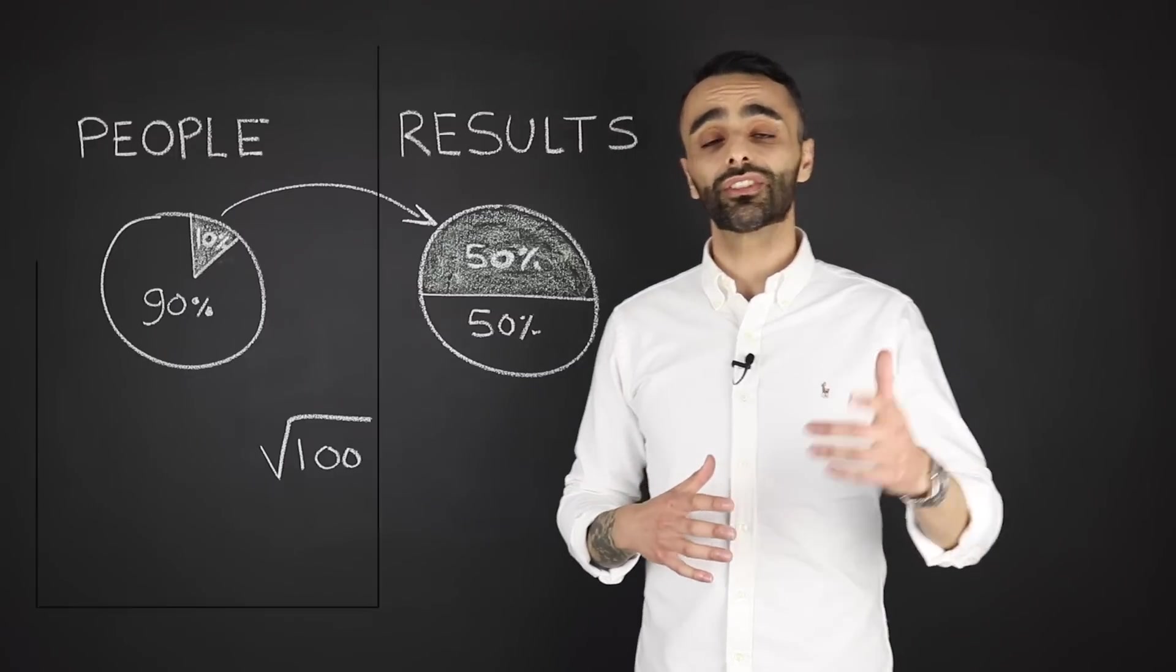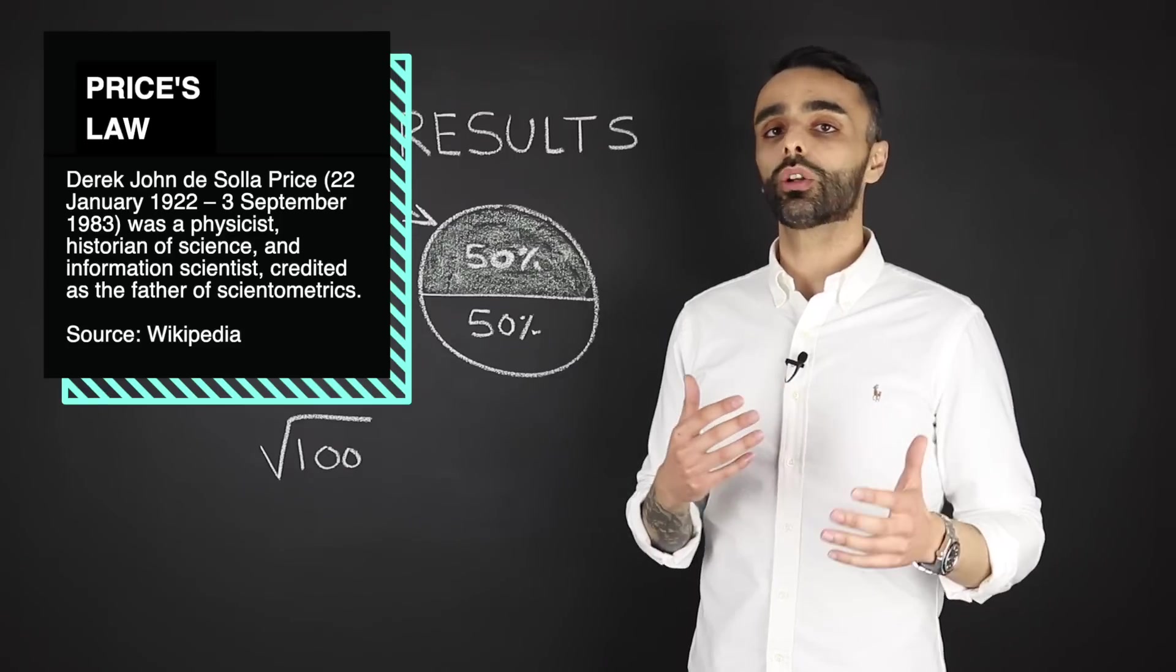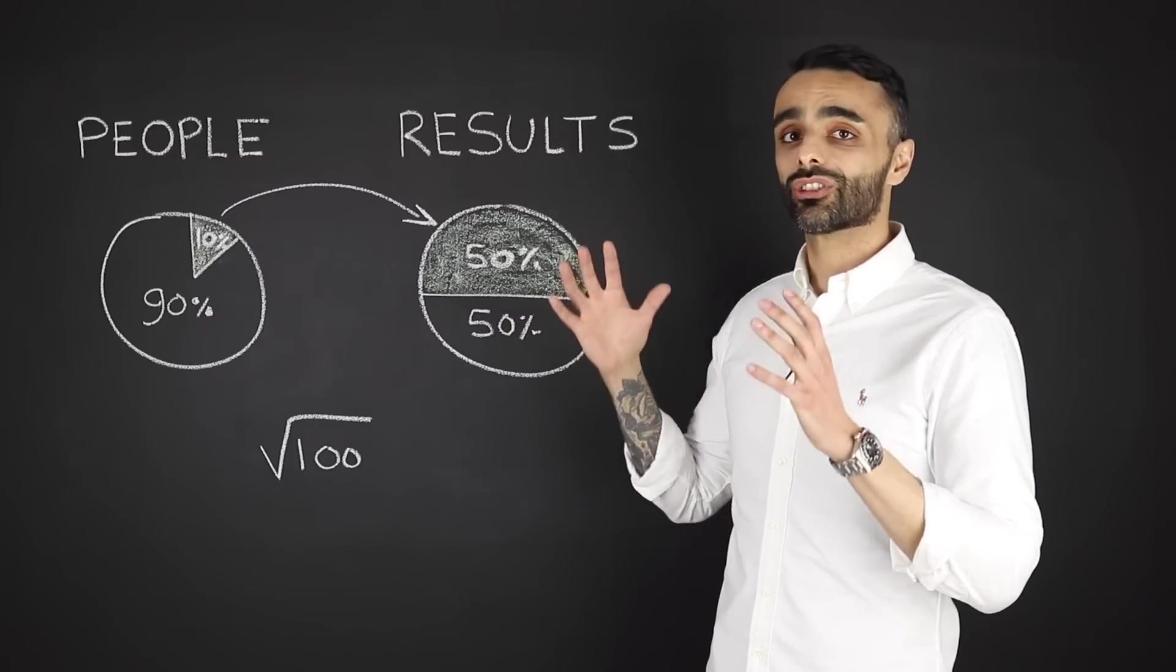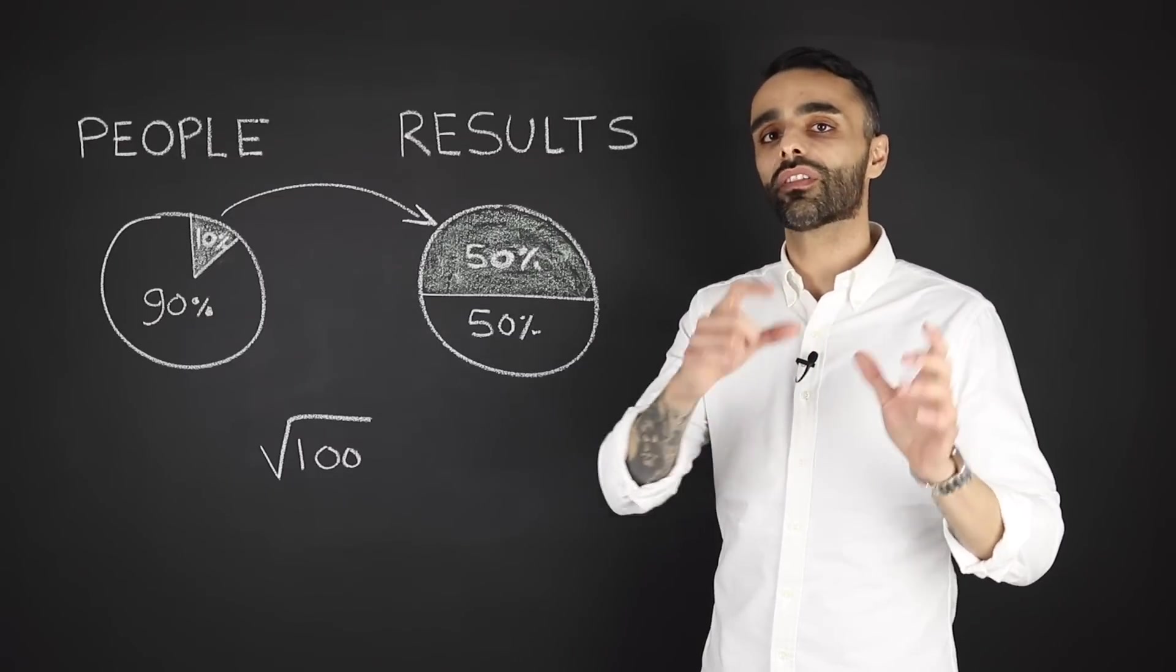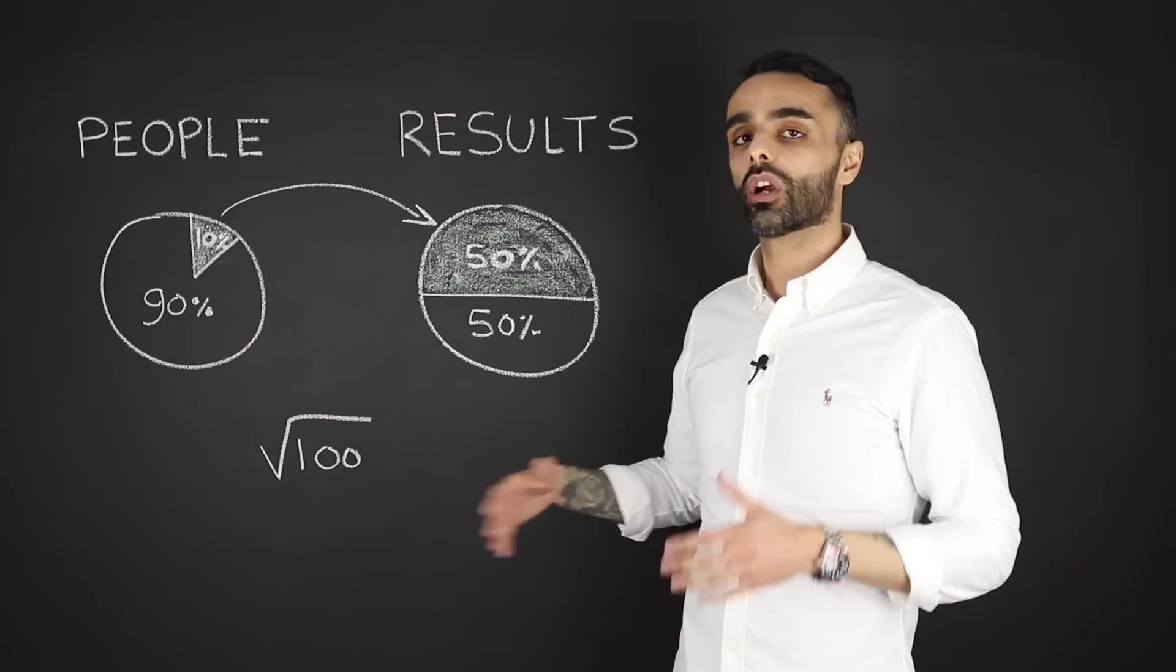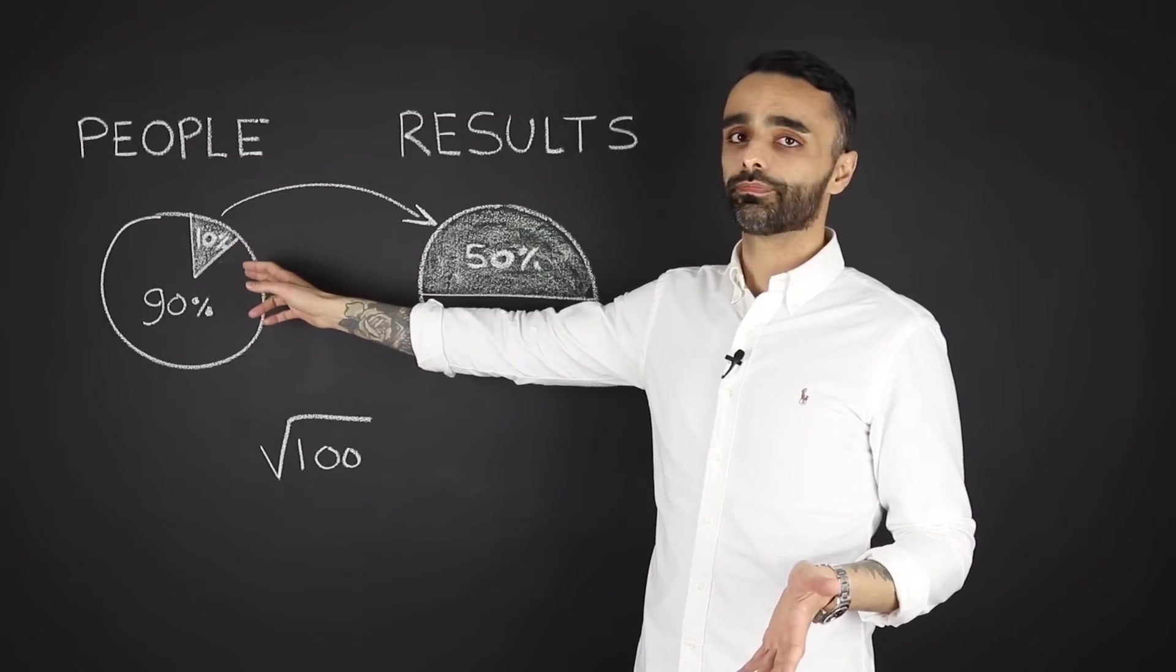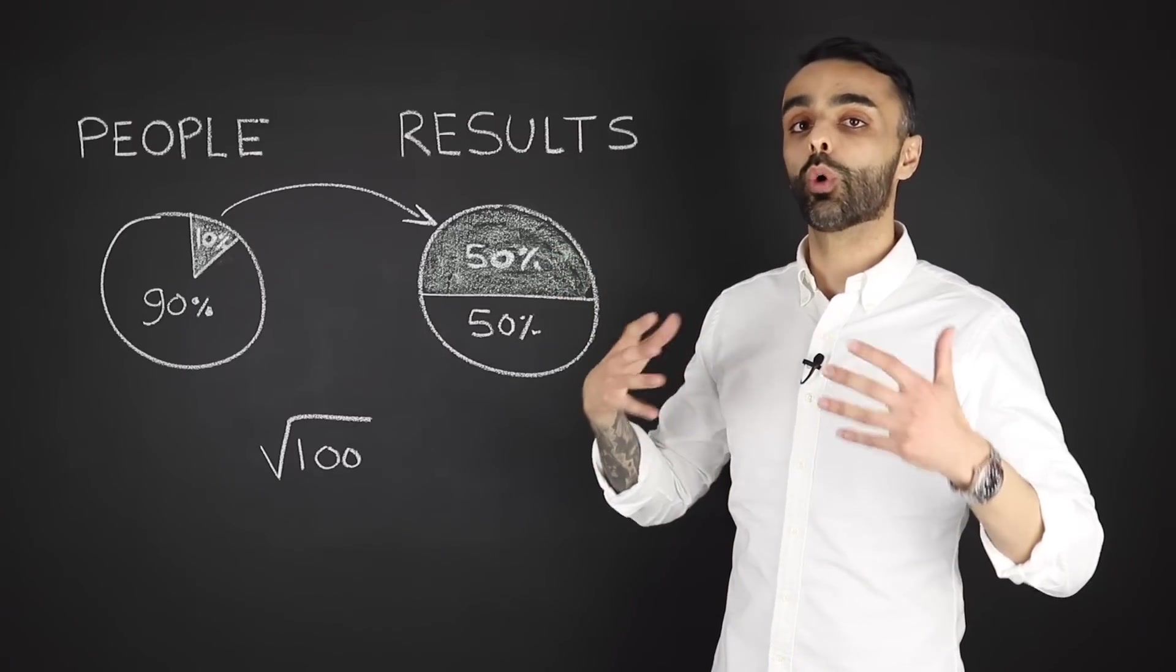So Derek Price, a British physicist, found out this concept first in academics. And what he noticed was that of all his colleagues, the work that was produced, 50% of it was done by the square root of the total number of people who were involved in that field. So let's take a look at an example of a field where 100 people work. Now, the square root of 100 is 10. And what that means is that 10% of the people contribute 50% of the work.